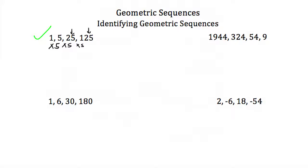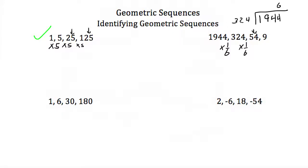Now let's look at 1,944, 324, 54, and 9. These are counting down, but that's okay. If I take 1,944 and divide it by 324, I get 6. So instead of dividing by 6, let's multiply by one sixth. If I do that, I definitely get 324. If I multiply 324 by one sixth, I do indeed get 54. And if I multiply 54 by one sixth, I'm definitely going to get 9. So this one is also a geometric sequence — it's multiplied by the same number again and again. It just happens to be that that number is a fraction, but that's okay. It's still a geometric sequence.